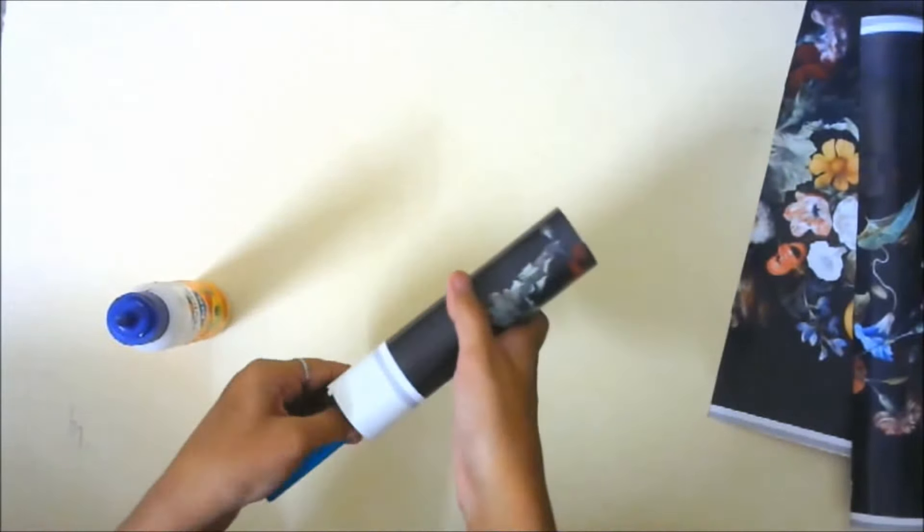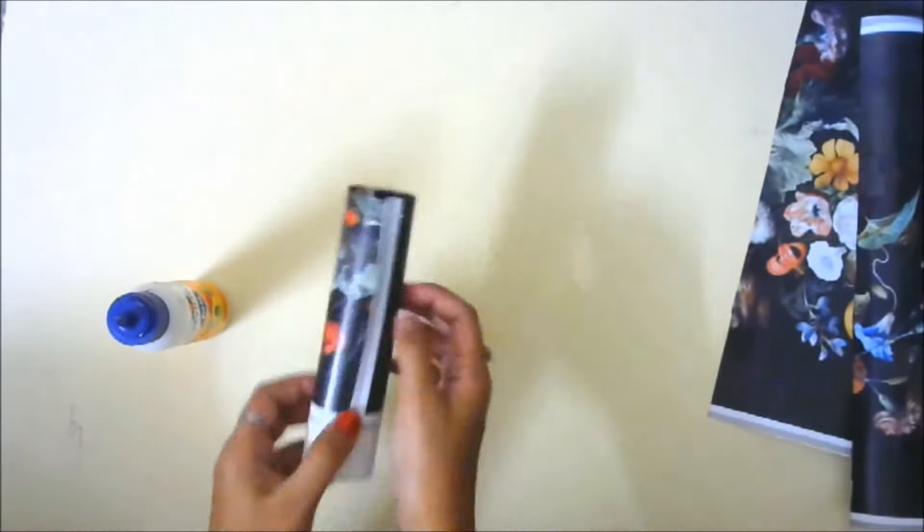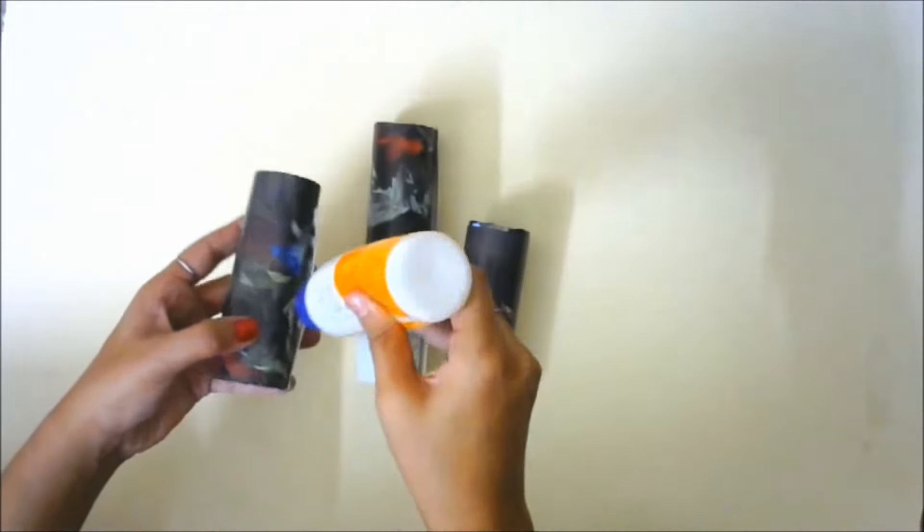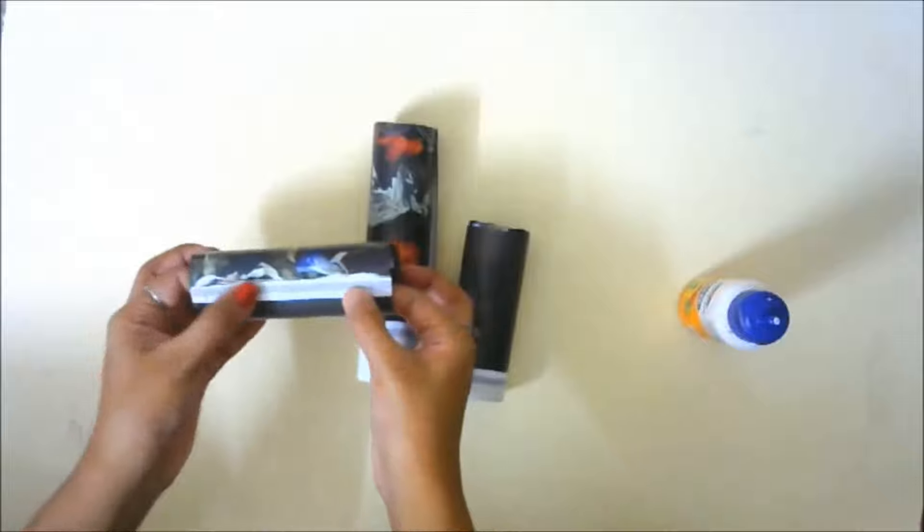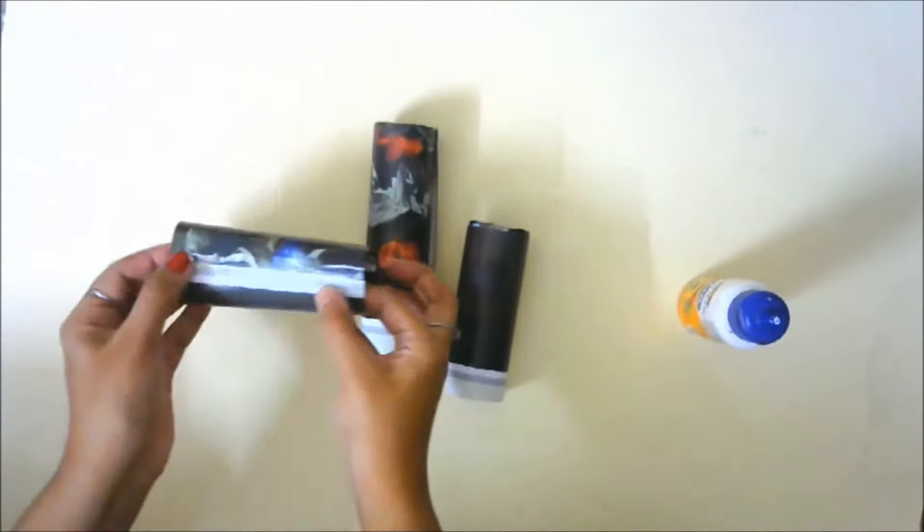Also make two more tubes from the remaining two sheets. Now let us make them even more stronger. In order to do this, just apply the glue at the ends and then just secure them properly so we will have three tubes of three different sizes.